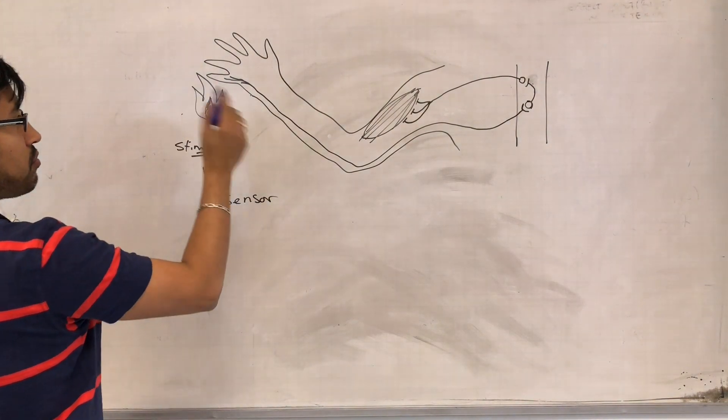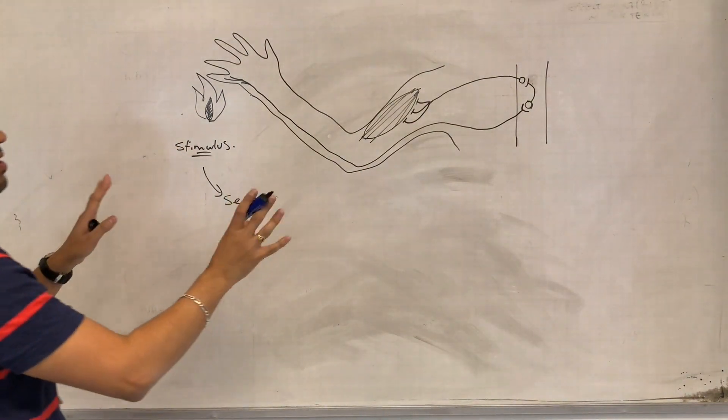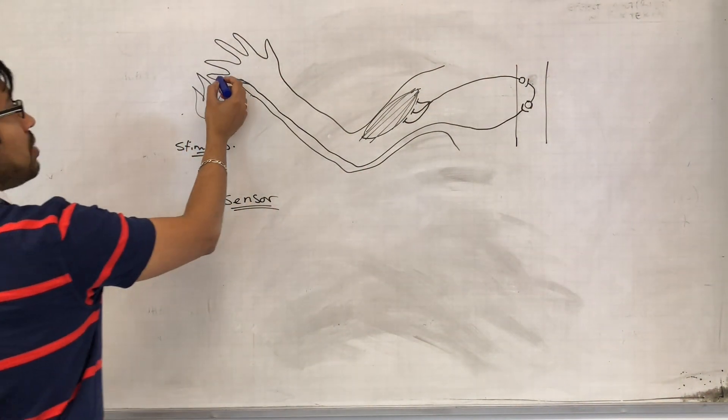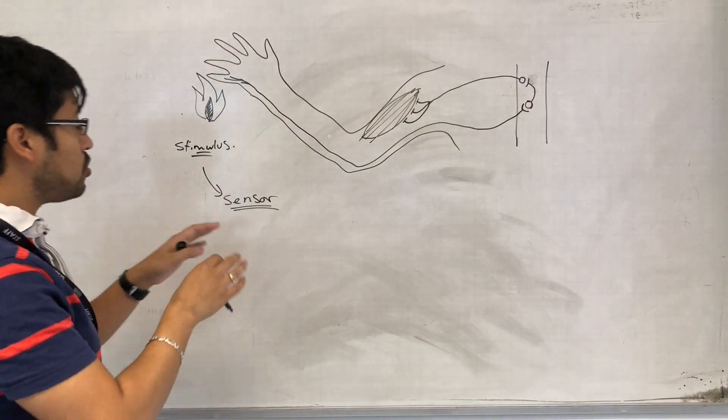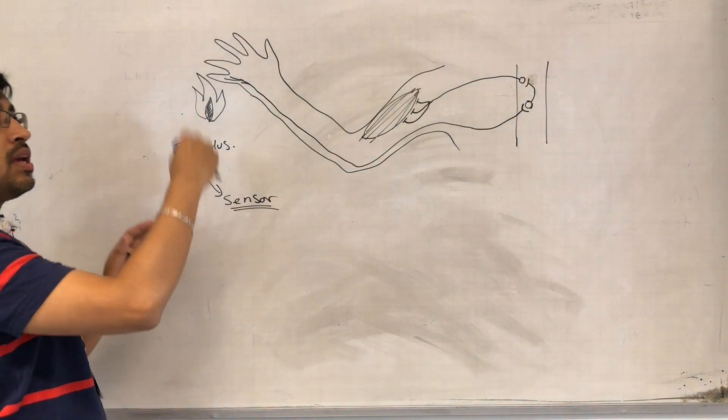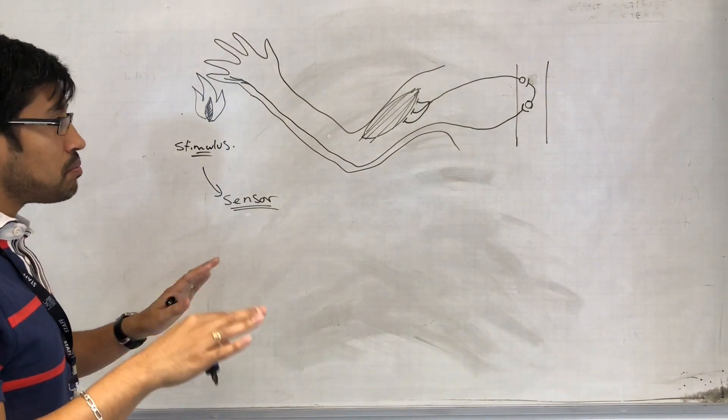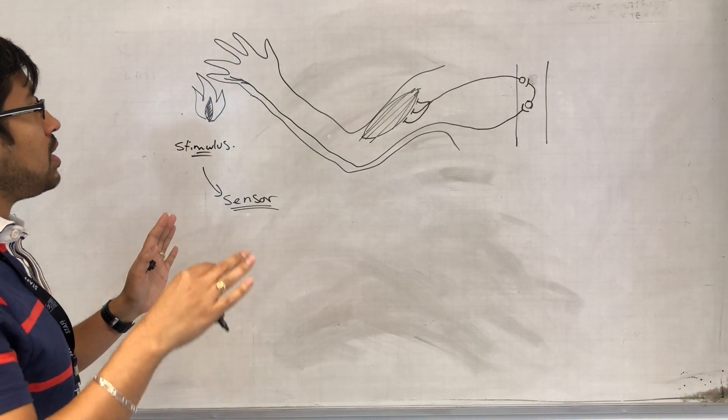So the first thing that we need in our system is a sensor. There's going to be parts of our body which are specialized to act as sensors, detecting environmental or sometimes even internal changes in different aspects,